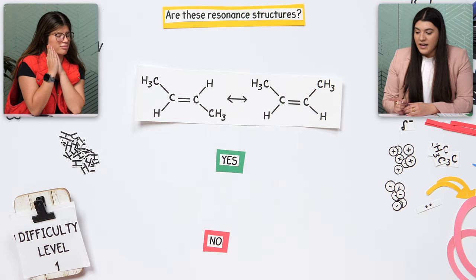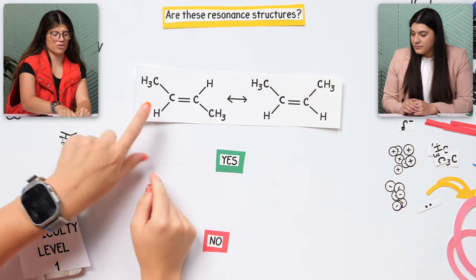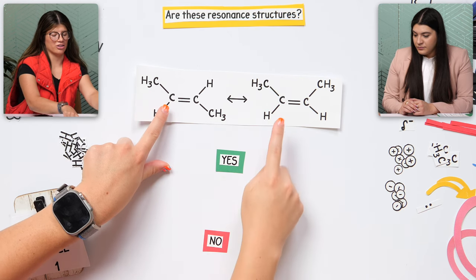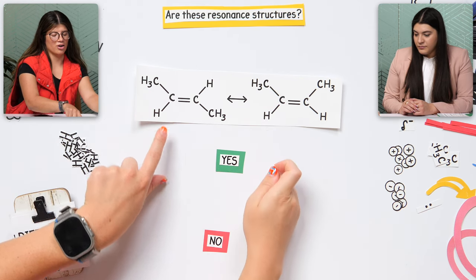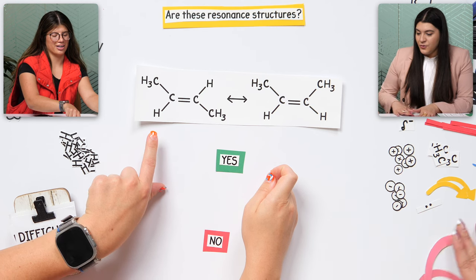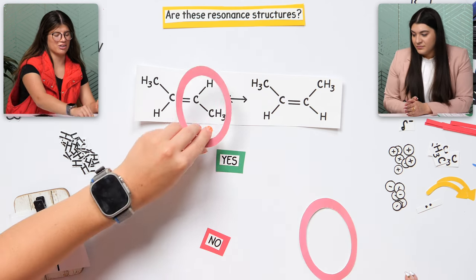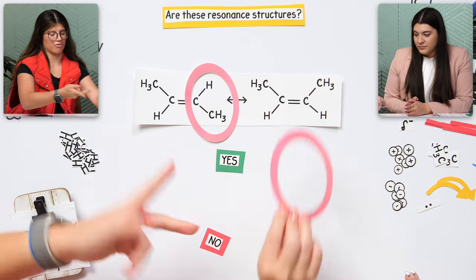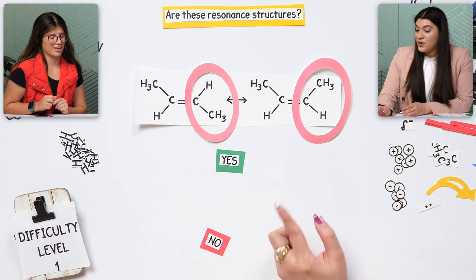Did electrons move? How do we know electrons moved? Because there's still the carbon with the three hydrogens bonded to that carbon, and on this side the same thing. Circle — what changed? It would be this right here flipped with this right here.